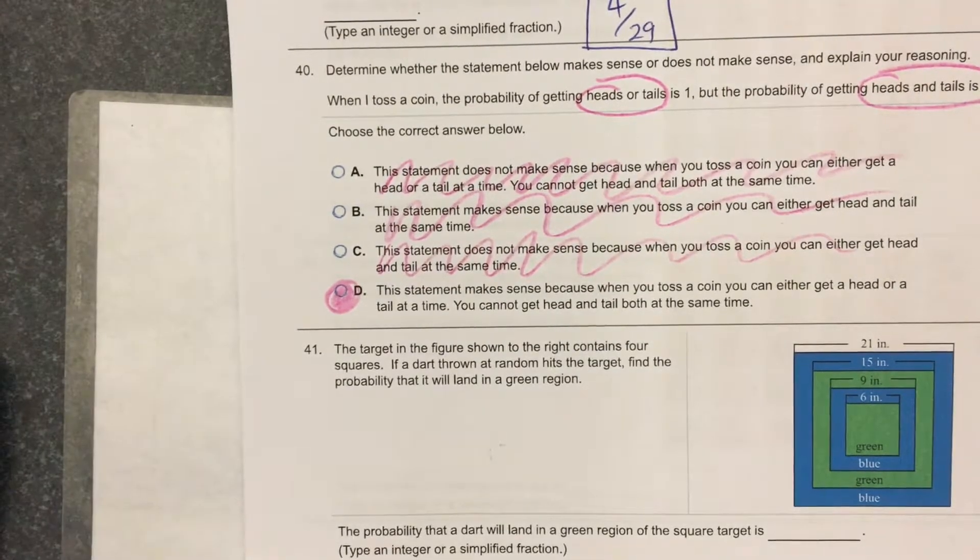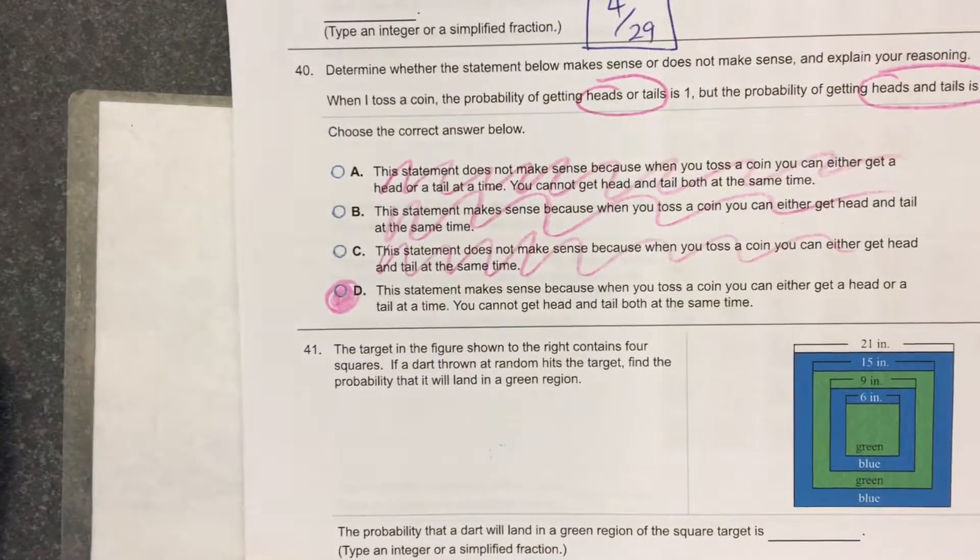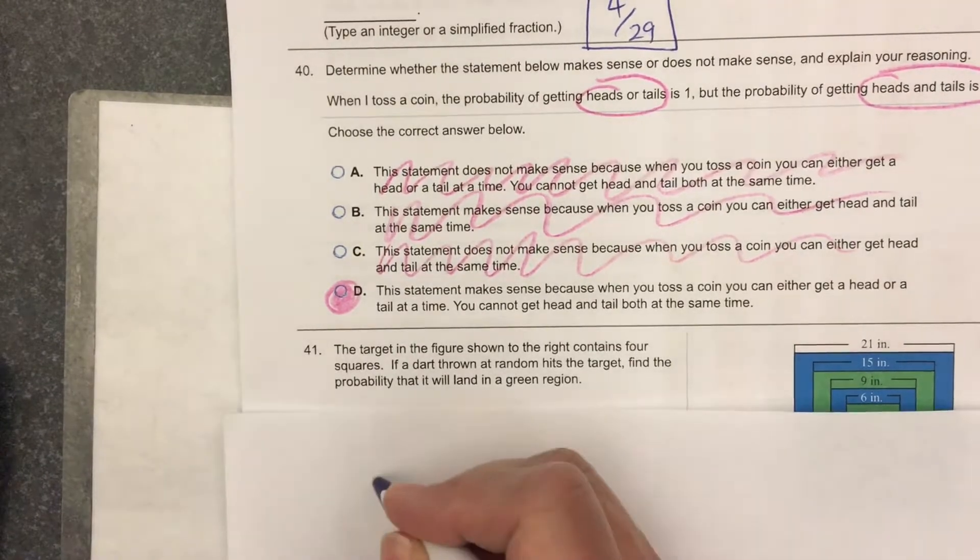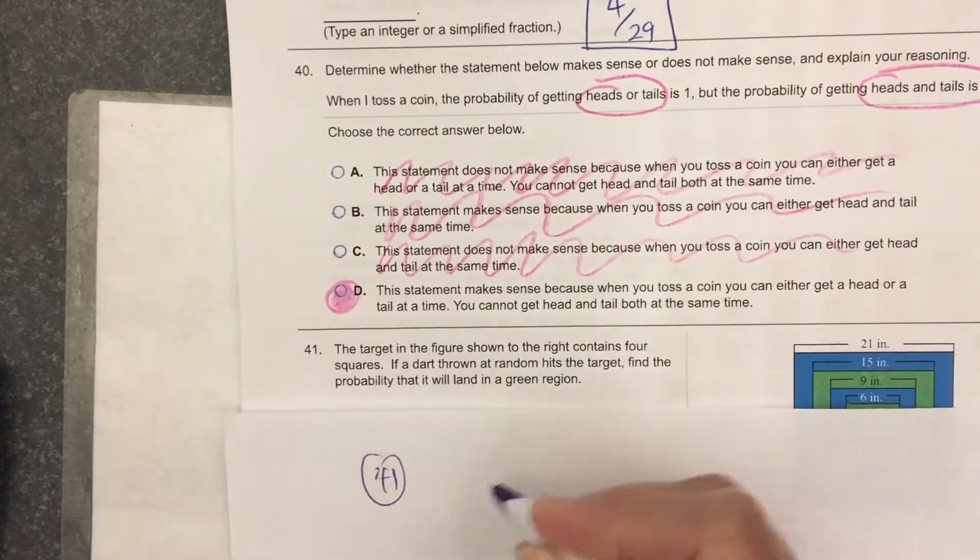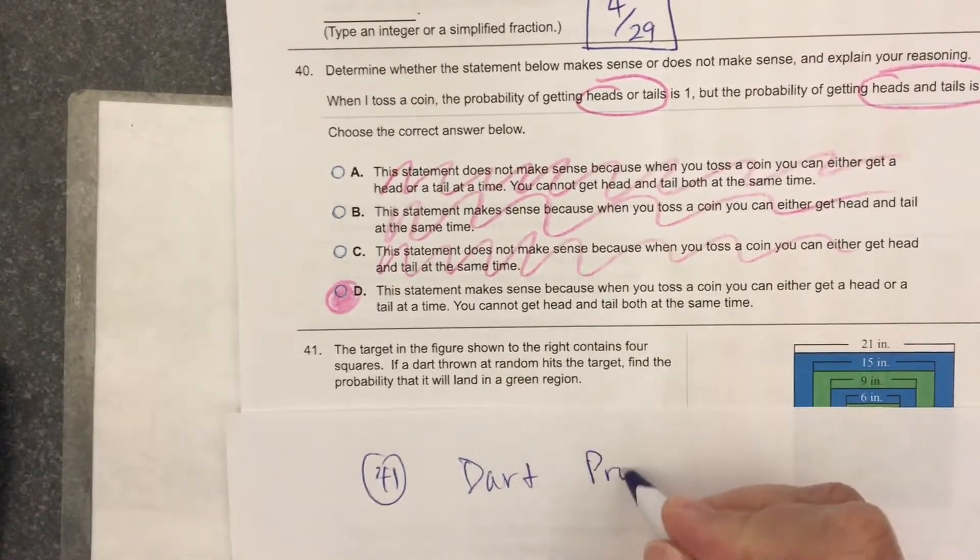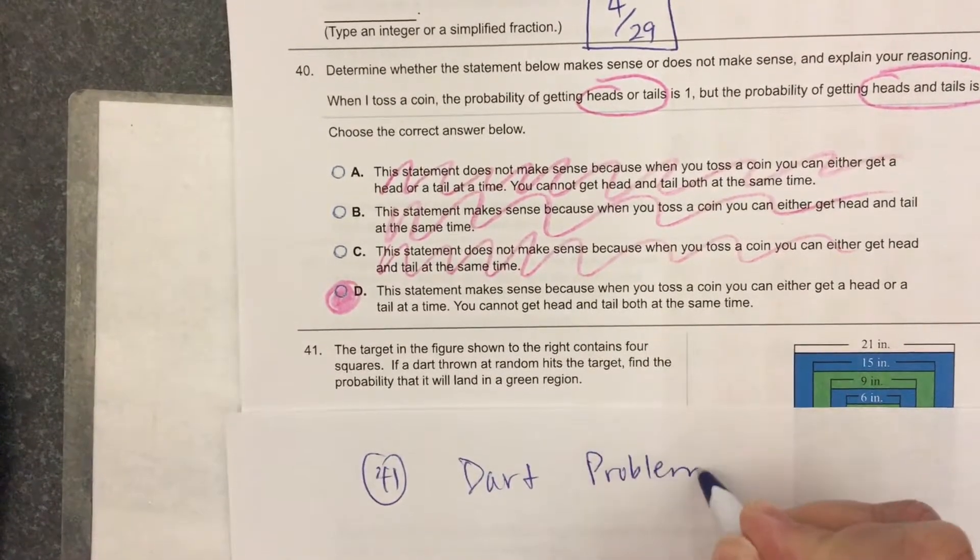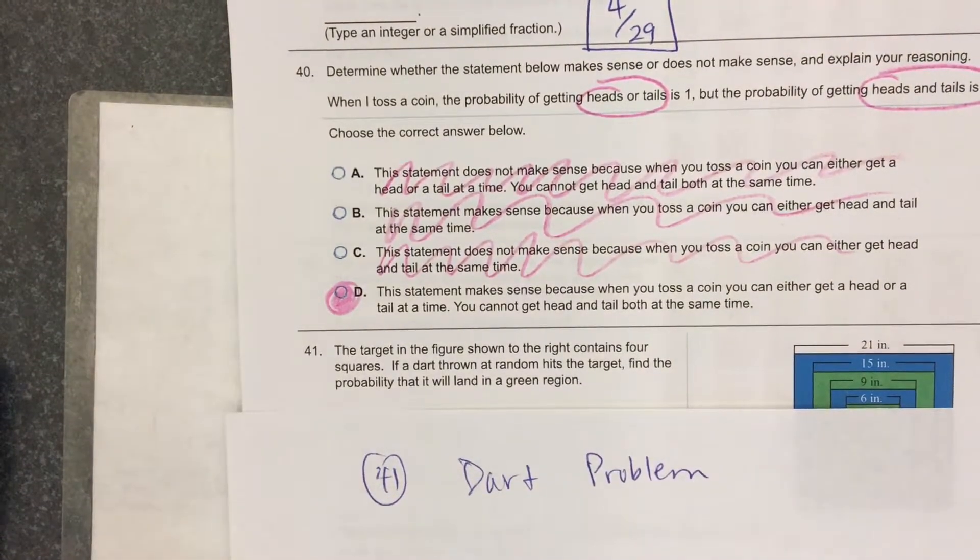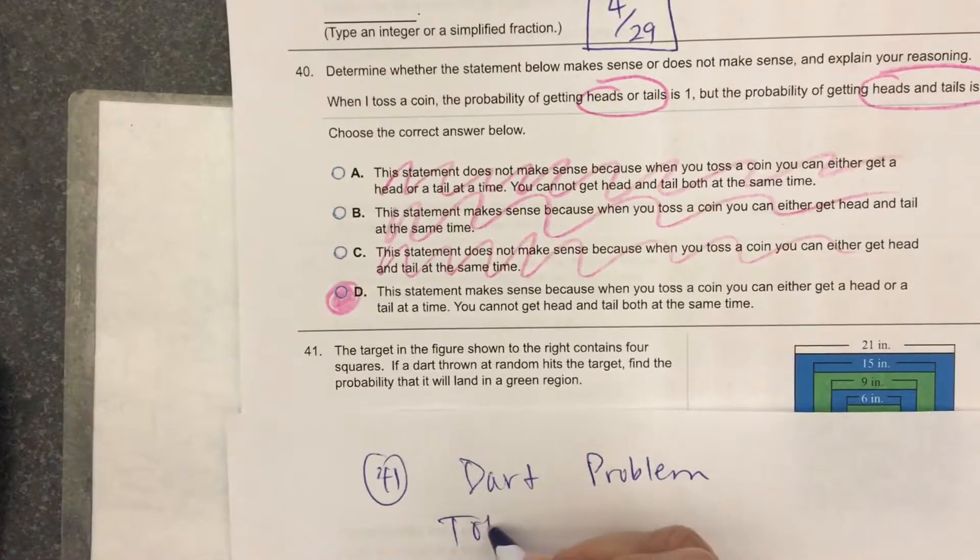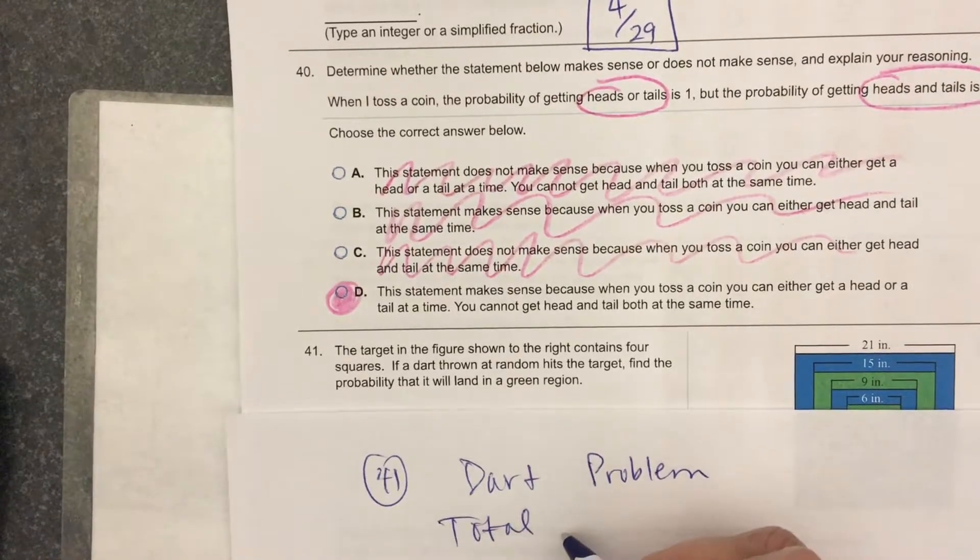They want this answer as a fraction, a simplified fraction. What I'll do for the dartboard problem, first thing I'll do is find the area of the total dartboard. They did say that it's a square.